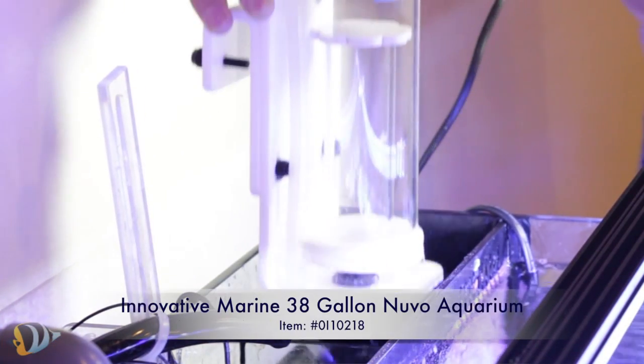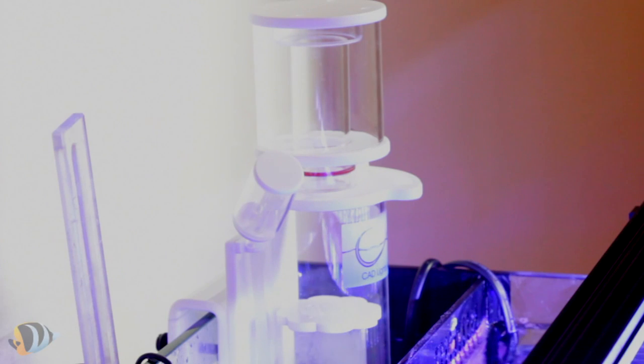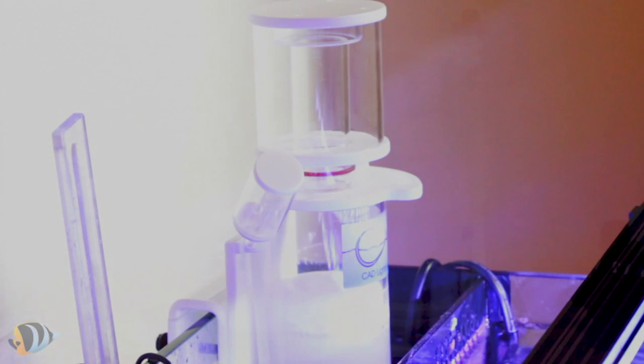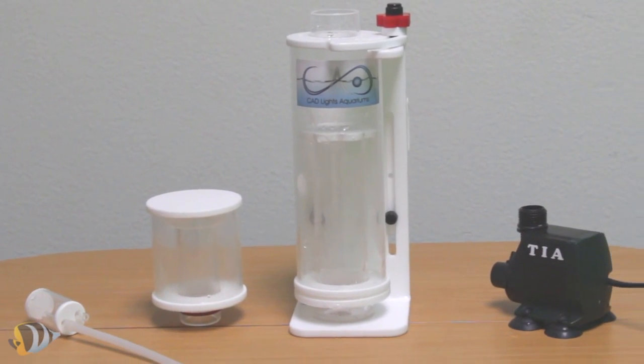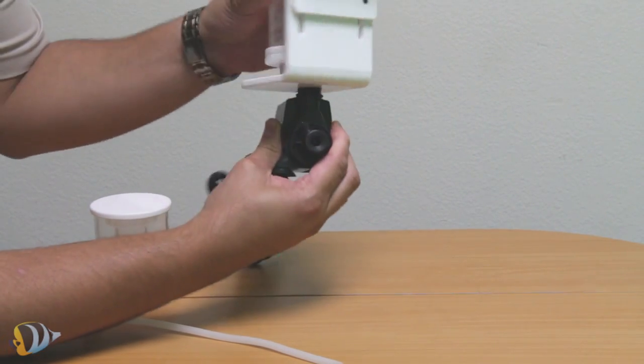The skimmer has a small footprint of only 3.5 inches by 3.25 inches. It does include a hang-on bracket, so be sure to measure the space on your aquarium to ensure it will fit. It is constructed of 100% cell cast acrylic and made of very easy to assemble components, as shown here.